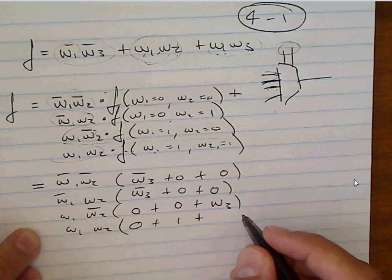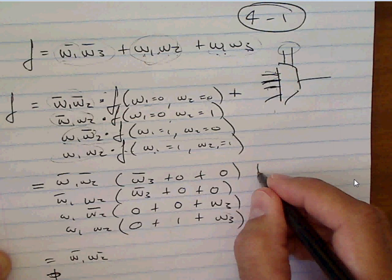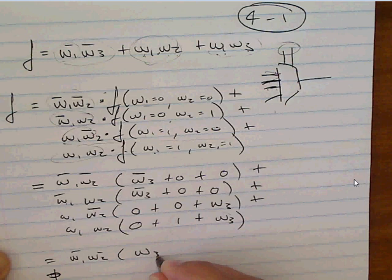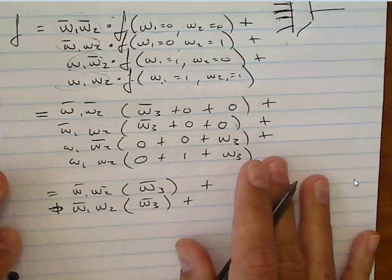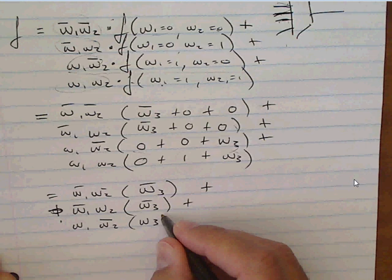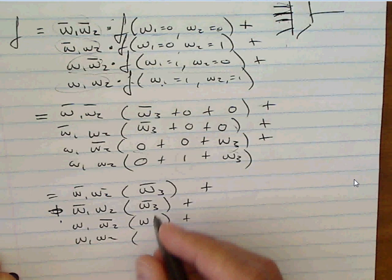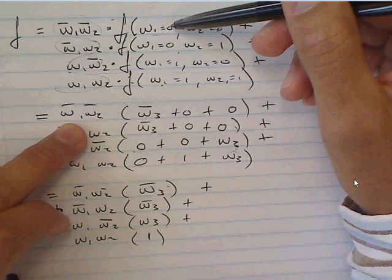Rewriting with the ORs included, the four cofactor values are: F(0,0) = NOT W3, F(0,1) = NOT W3, F(1,0) = W3, and F(1,1) = 1. After a quick check to confirm the calculation is correct, this gives the complete mathematical expression describing the circuit.